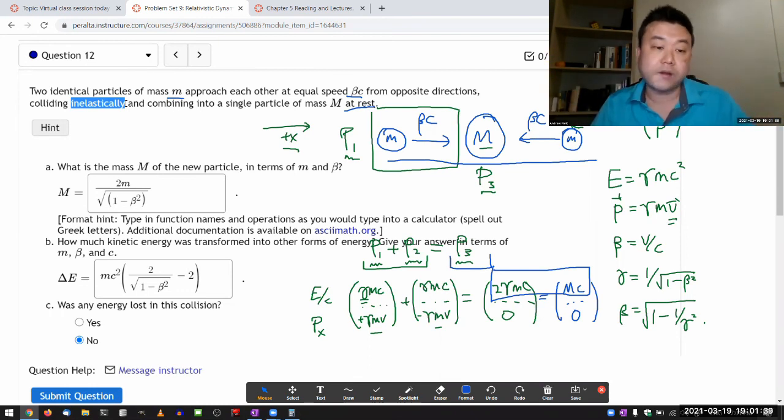So in special relativity, energy is always conserved. That's what we've always said. It's just that in Physics 4A, we weren't always accounting for all forms of energy. In special relativity, we do.